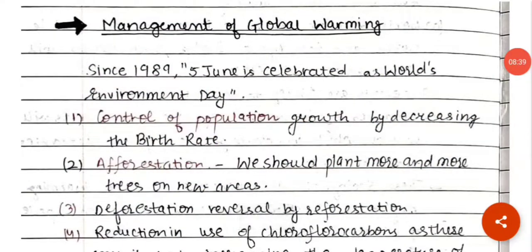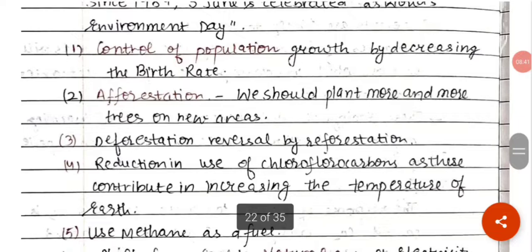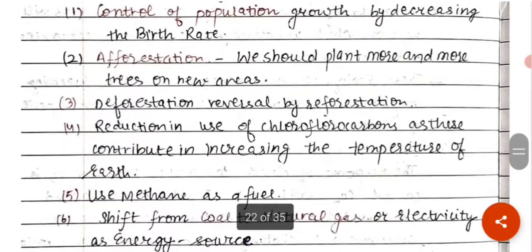To prevent global warming, we need to control pollution and carry out afforestation — planting more trees instead of cutting them down.